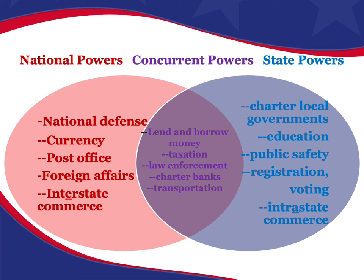Some powers are only national powers — states have no right to act in those areas. Some powers are just state powers — the national government cannot get involved. And some are concurrent powers, meaning both can act. For example, taxation: you can pay federal income tax and state taxes as well — that's a concurrent power to tax. Let's talk about national powers.